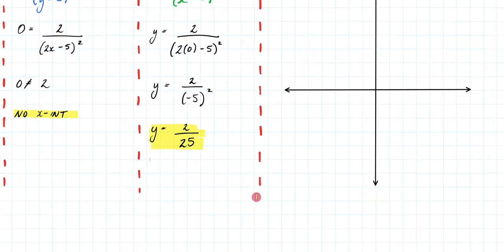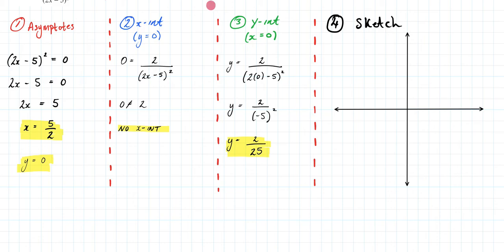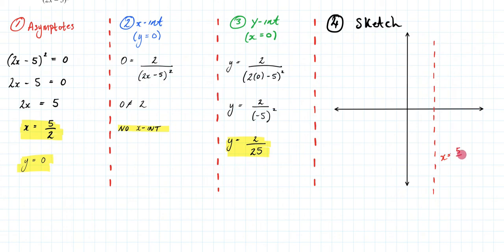So now I will zoom out and put all this information onto my graph. The first bit of information I'll put in will be my x and y asymptotes. So my x asymptote is going to be 5 on 2. I'll draw that in. That is x equals 5 on 2. My other one is going to be at y equals 0. Next, I need to mark in my y intercept, which is 2 over 25.